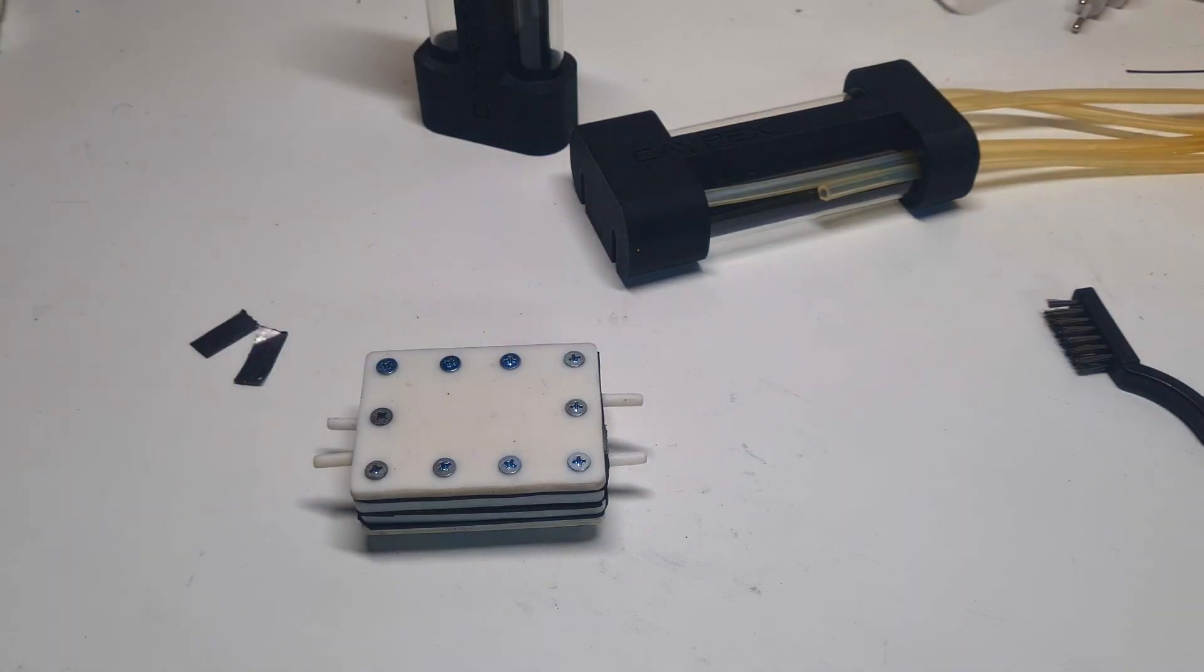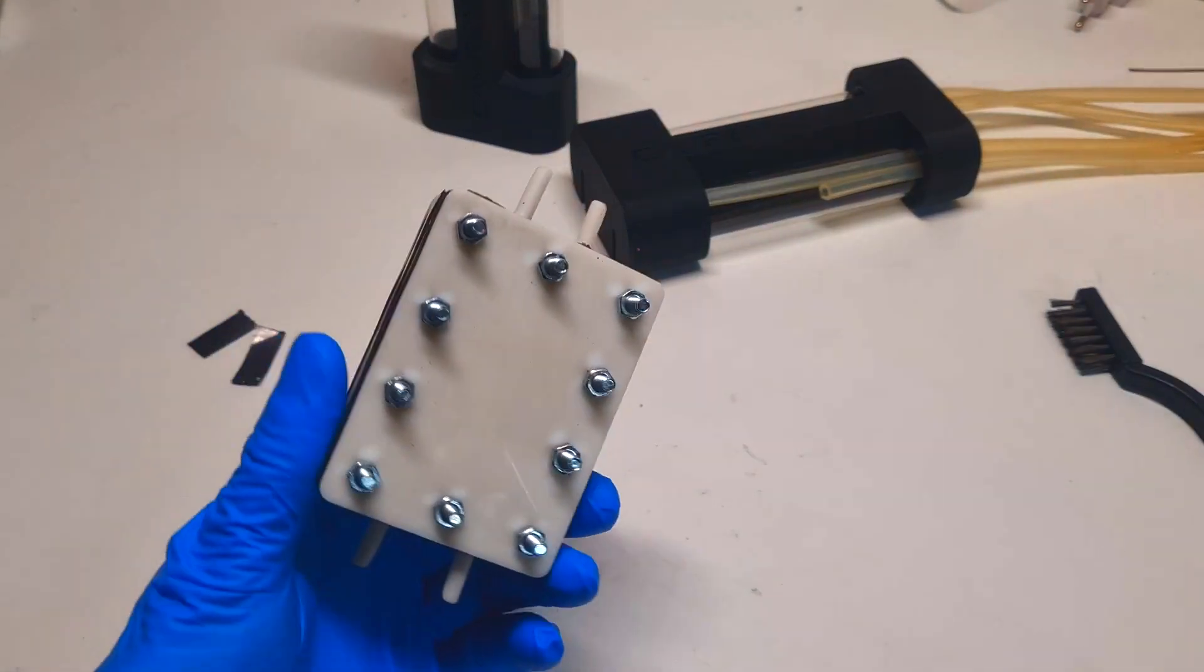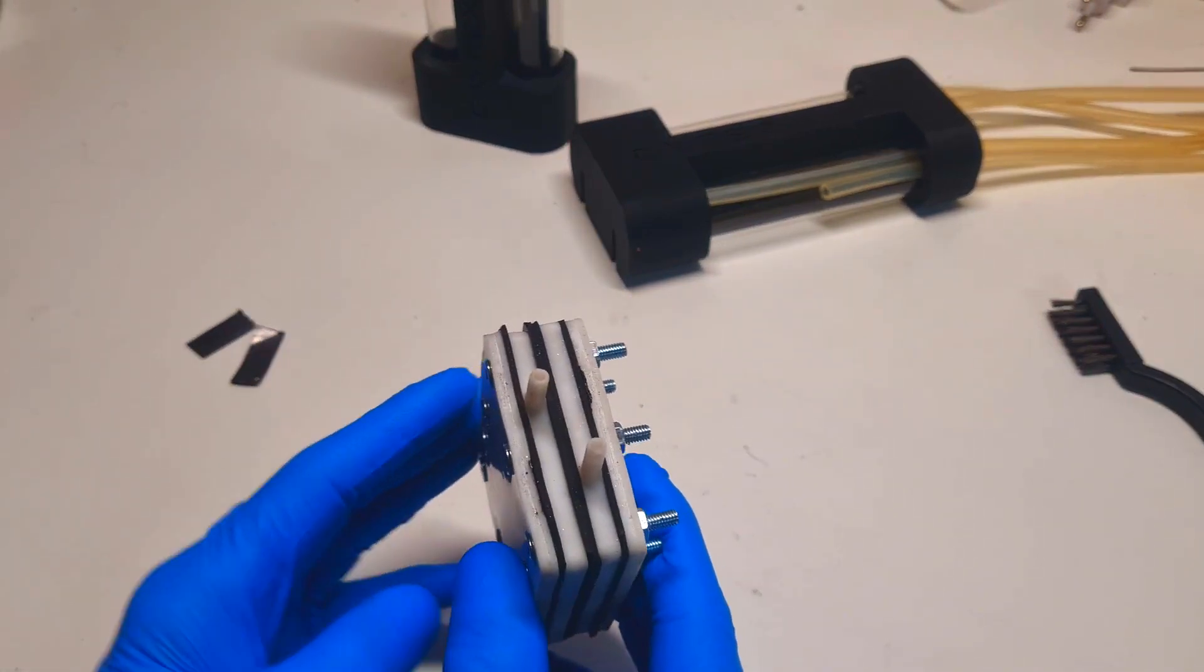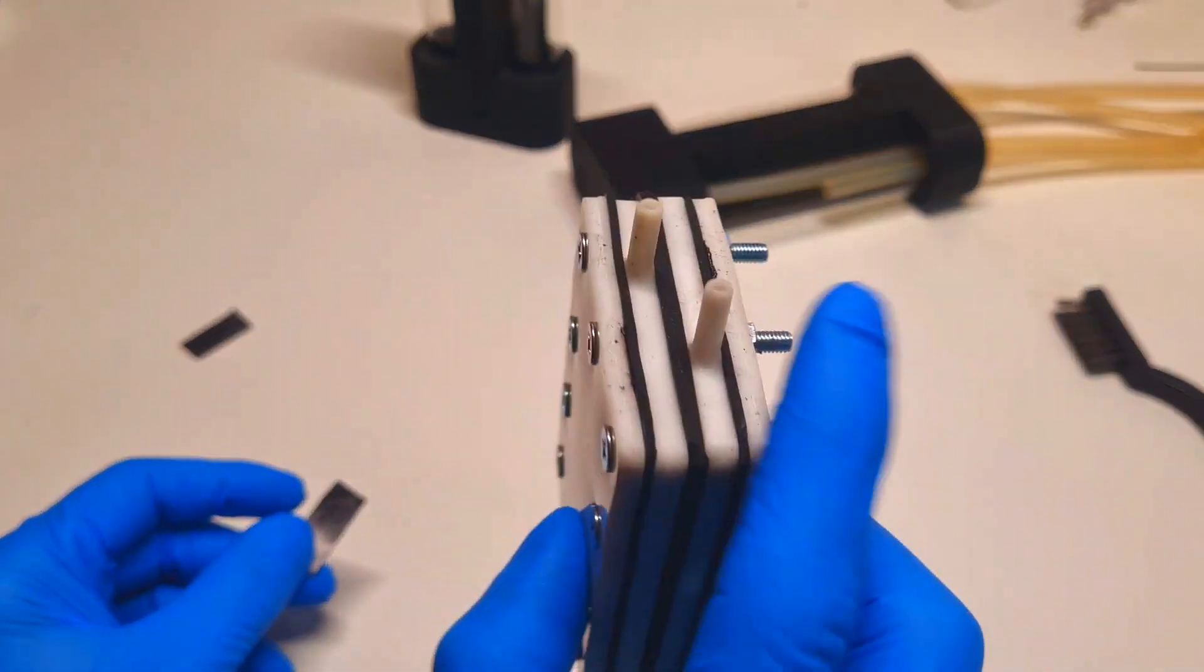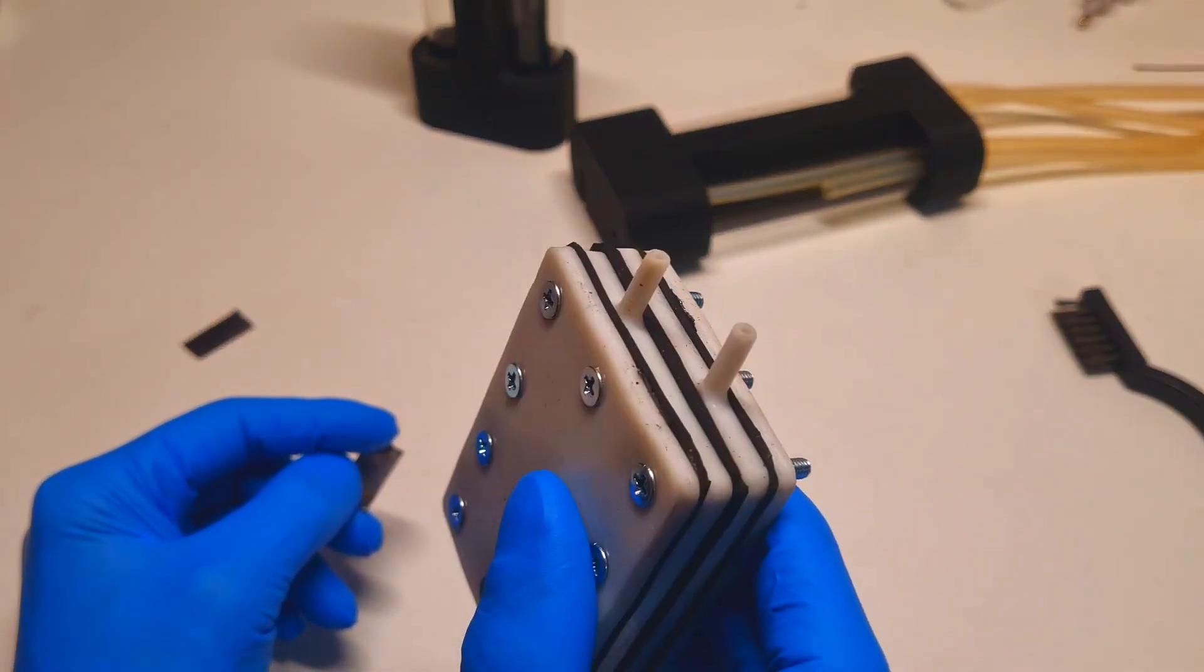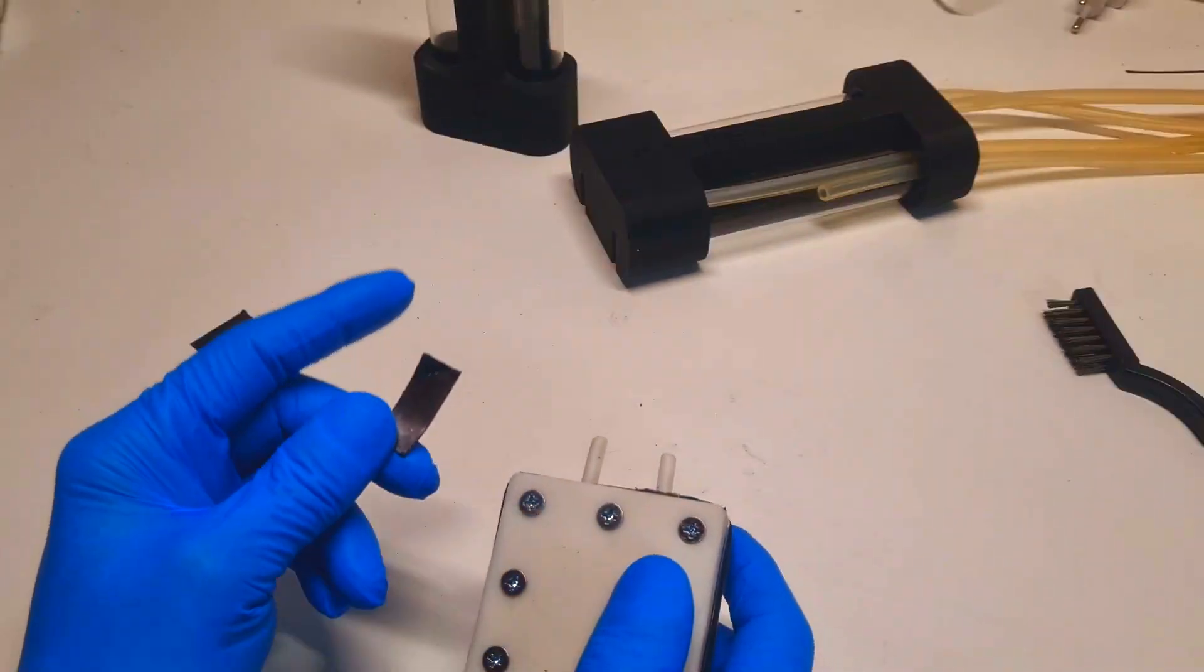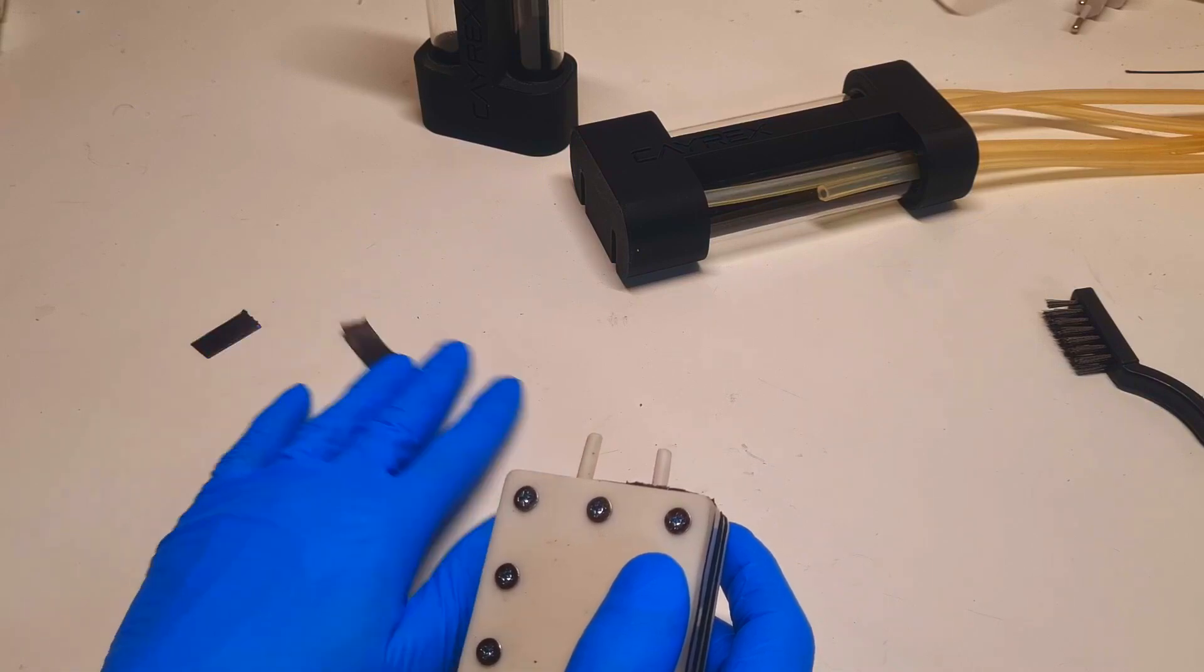So guys, here is my cell for this flow battery and I actually broke the current collectors. I mean this graphite hole contact to the current collector, so definitely I need to replace these graphite holes with some copper.